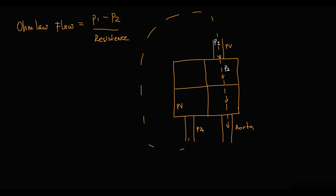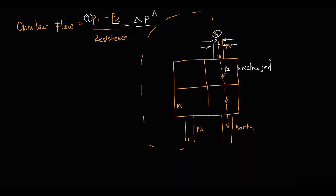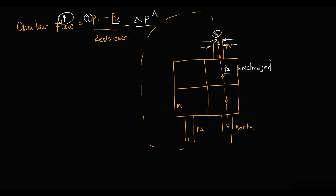The increase in intrathoracic pressure is applied to pulmonary vessels, and the more it compresses them, the higher the pressure inside them becomes — increasing P1. At the same time, pressure inside the left atrium remains unchanged. The pressure difference increases, so flow from pulmonary vessels to the left atrium increases, meaning more blood volume comes to the left atrium. This is called an increase in systemic venous return.